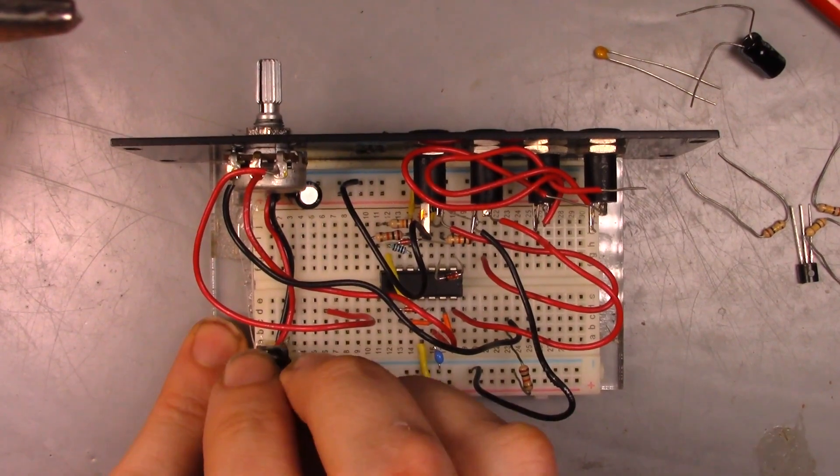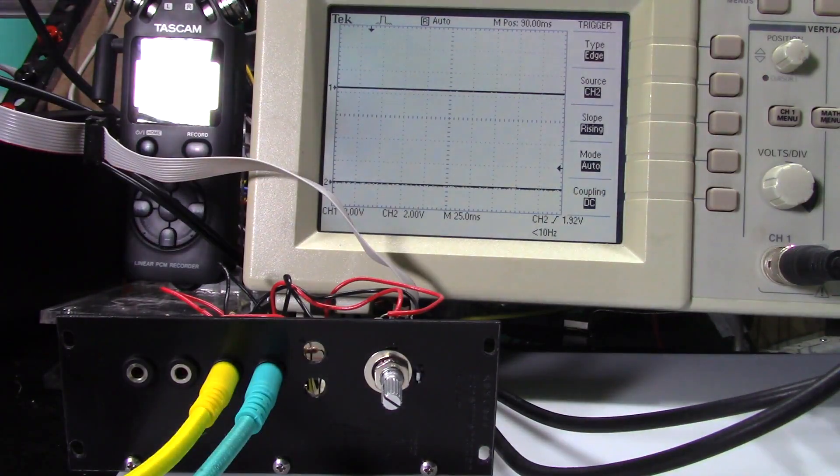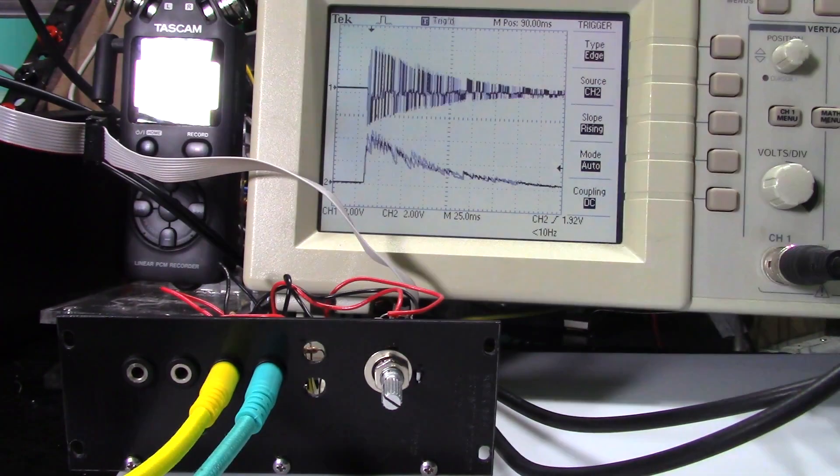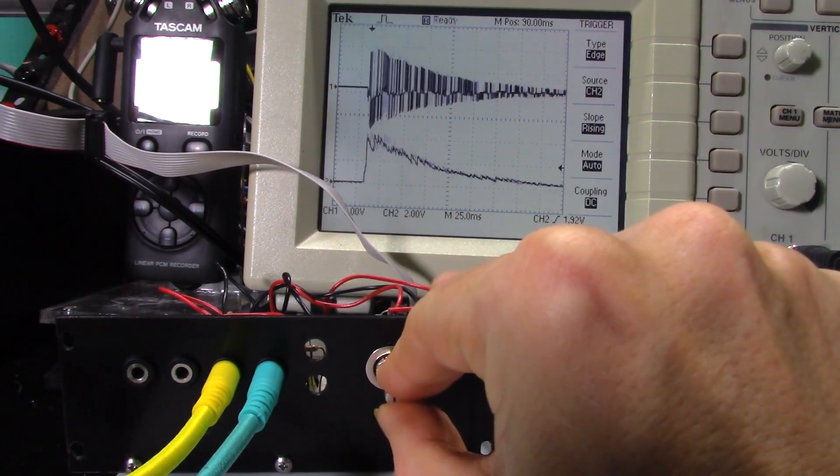Once we pass a quick smoke test, we can mount it on the rack. Now let's see what it does. With the signal from a percussion module as the top trace and the envelope follower as the bottom trace,